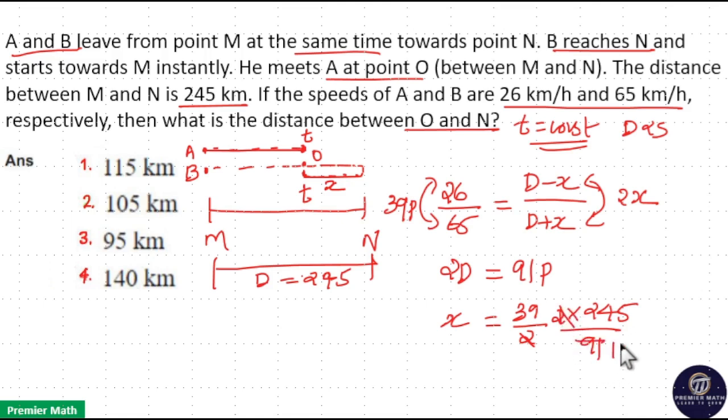2 and 2 cancel. 7 goes 1 time in 9, 3 times in 21, 5 times in 35. 13 goes 3 times in 39. 3 into 35 is 105. So X equals 105. Option 2 is your answer.